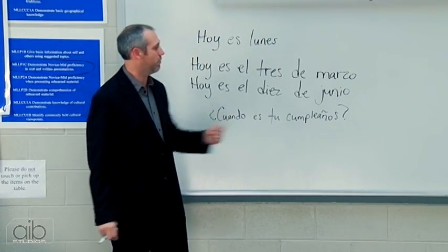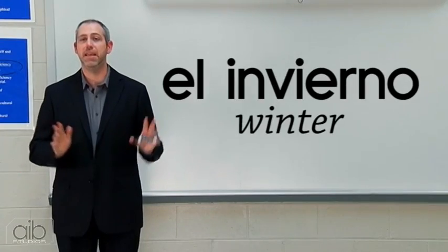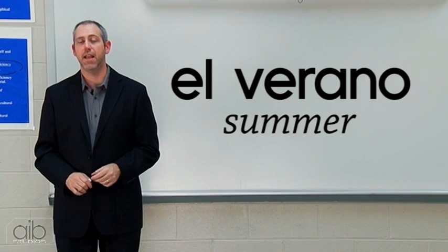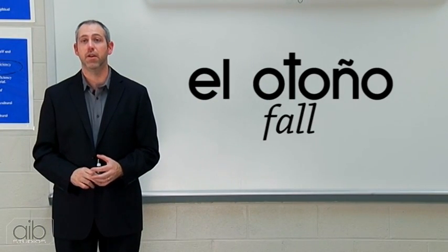Now we have the days, the months, and the seasons. I want to put the seasons on the screen so you can see how they're spelled, as some people find the spelling a little tricky. Starting with wintertime — winter in Spanish is el invierno. Moving into springtime is la primavera. Getting hotter into the summertime — el verano. And finally, fall is el otoño.